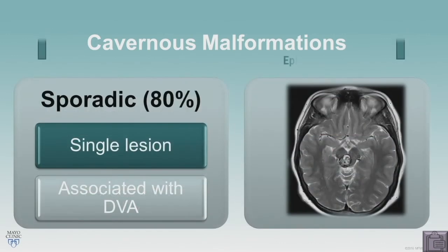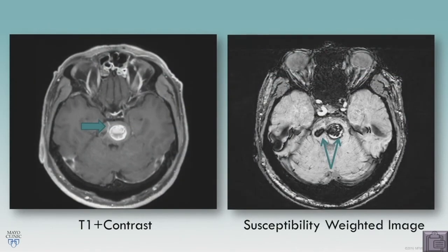In the sporadic form, you typically see a single lesion, and it's often associated with a developmental venous anomaly. Developmental venous anomalies are congenital and found at birth, whereas we think that cavernous malformations are acquired. Sometimes you'll see multiple cavernous malformations in the sporadic form, but they're usually clustered around a developmental venous anomaly. Here you see at the large arrow the developmental venous anomaly, and then clustered around that are two cavernous malformations.